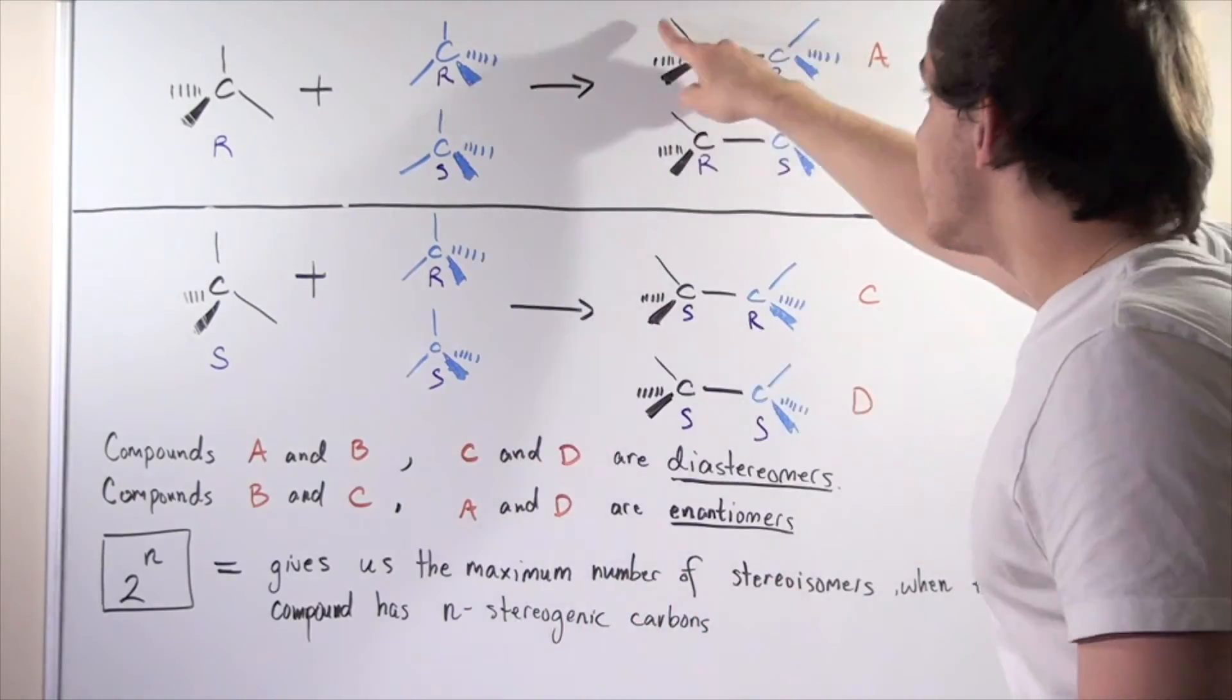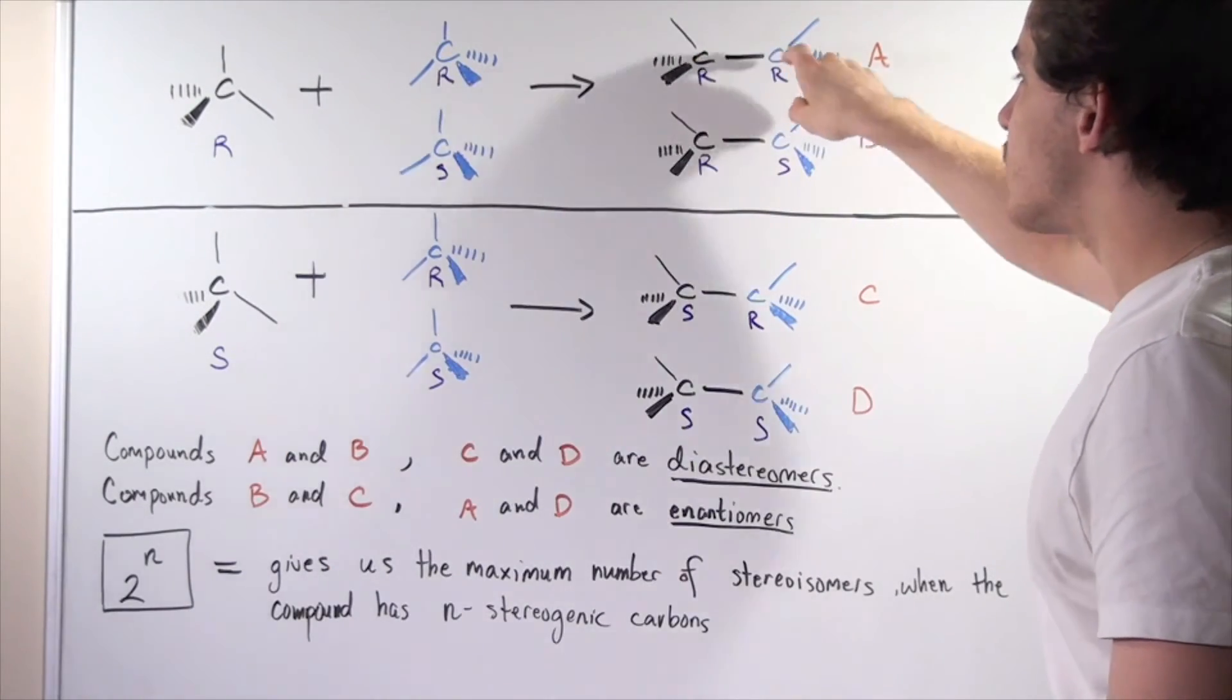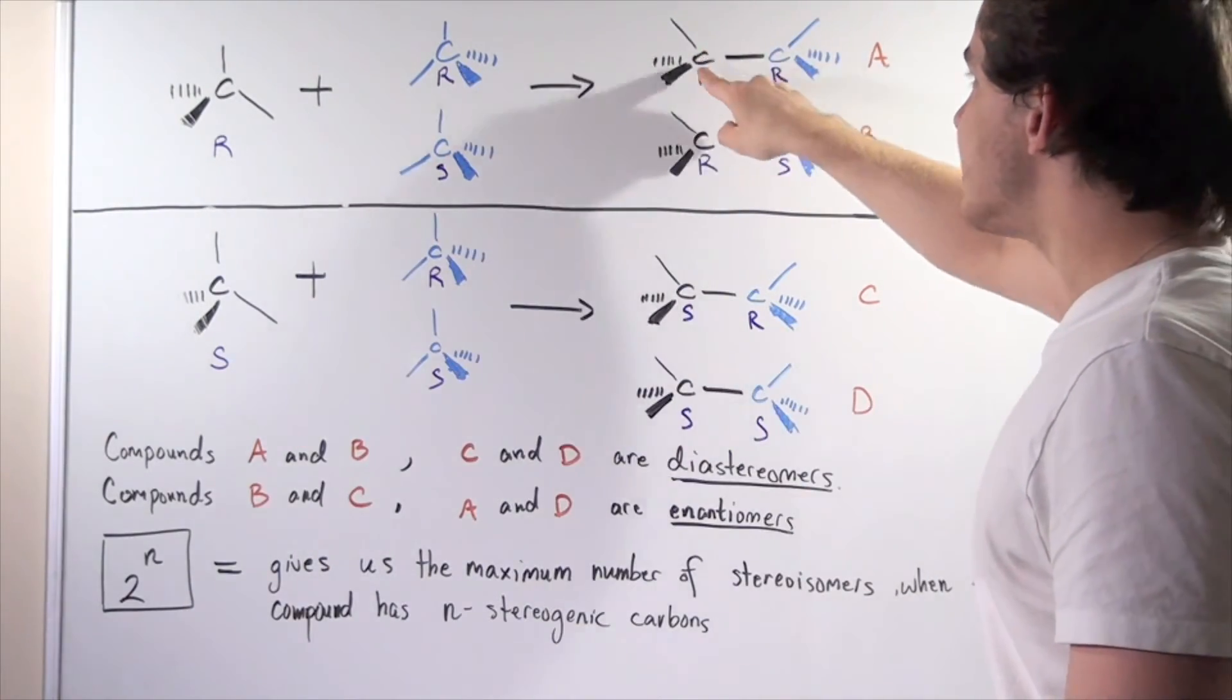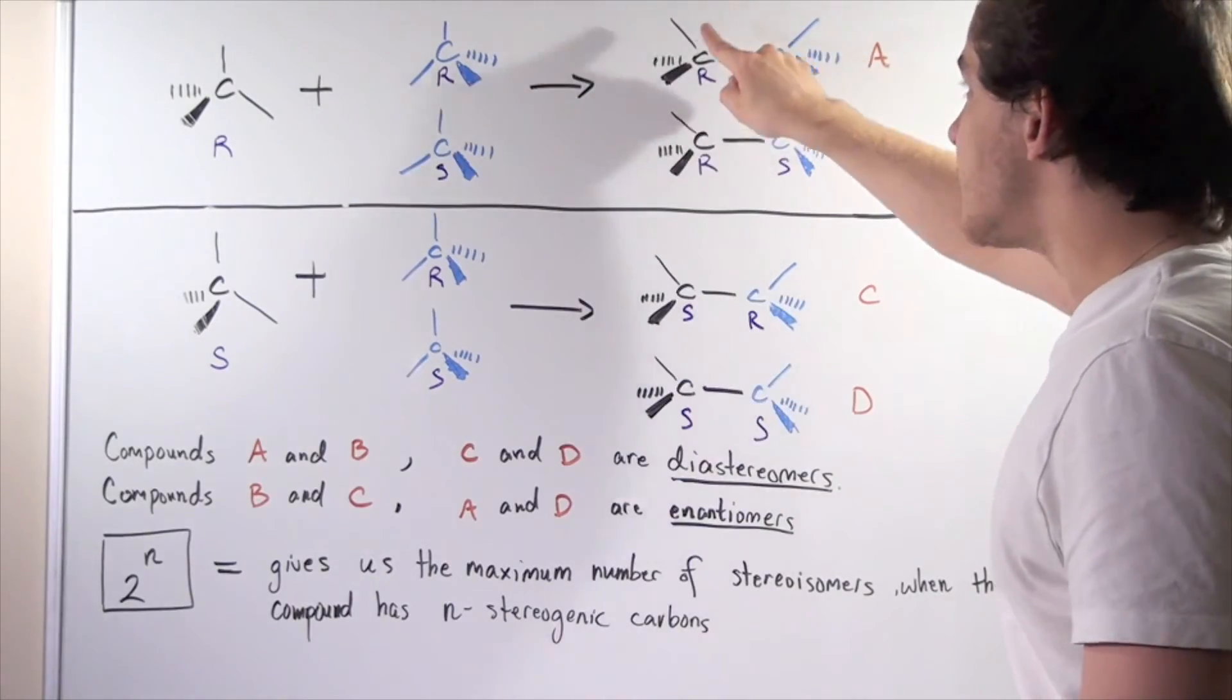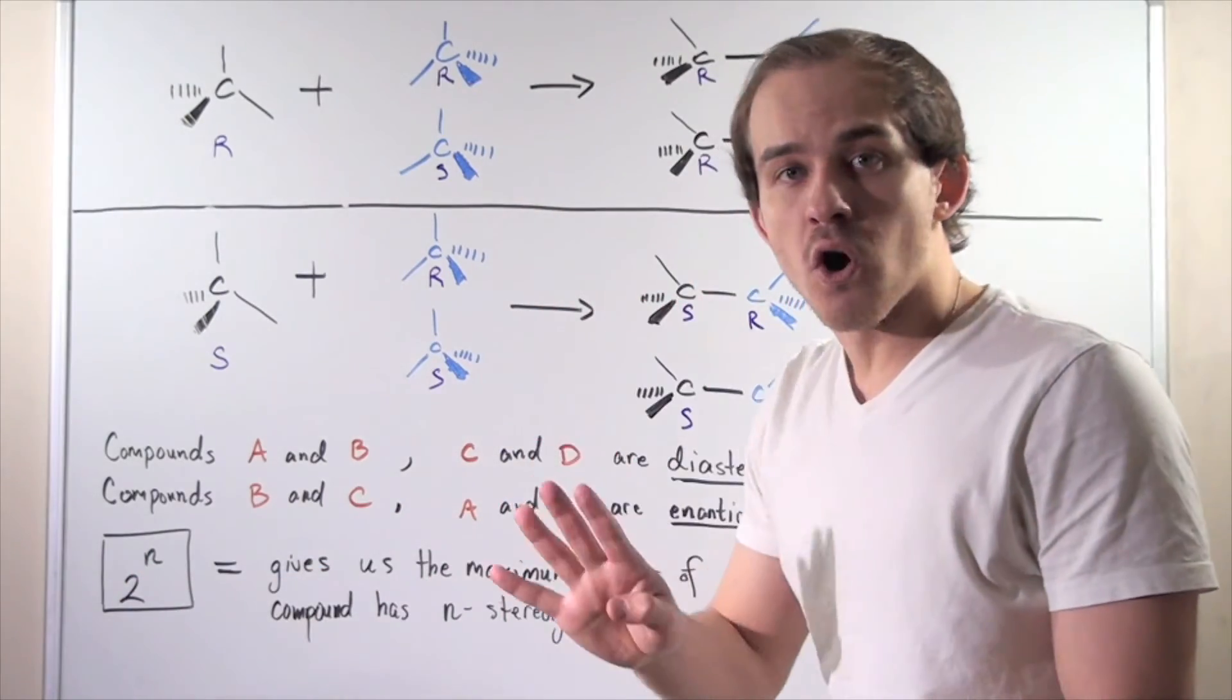So for example, let's take this compound where we have two different stereogenic carbons. So that means since we have two different stereogenic carbons, our n is two. So two to the two is four.